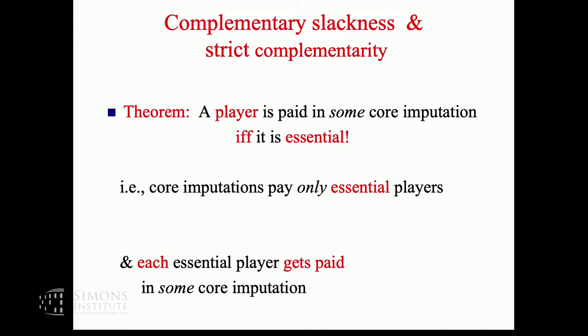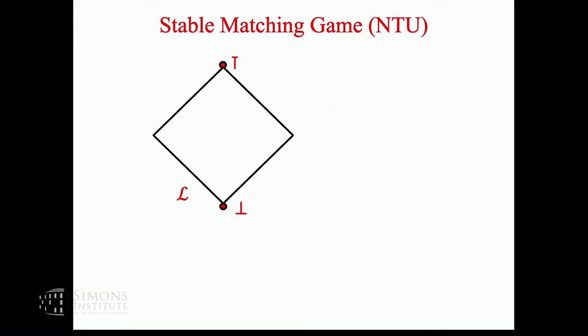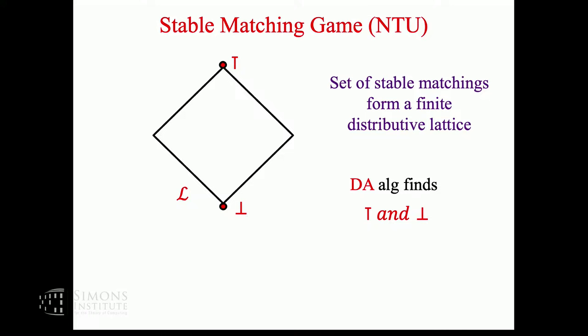Let's jump to stable matching, which has some analogous properties. It also has these extreme solutions because the set of stable matchings form a distributive lattice. The only difference is this time it's a finite distributive lattice. The Gale-Shapley deferred acceptance algorithm finds exactly these two solutions depending on who proposes. Both are extreme solutions that favor one side and disfavor the other.